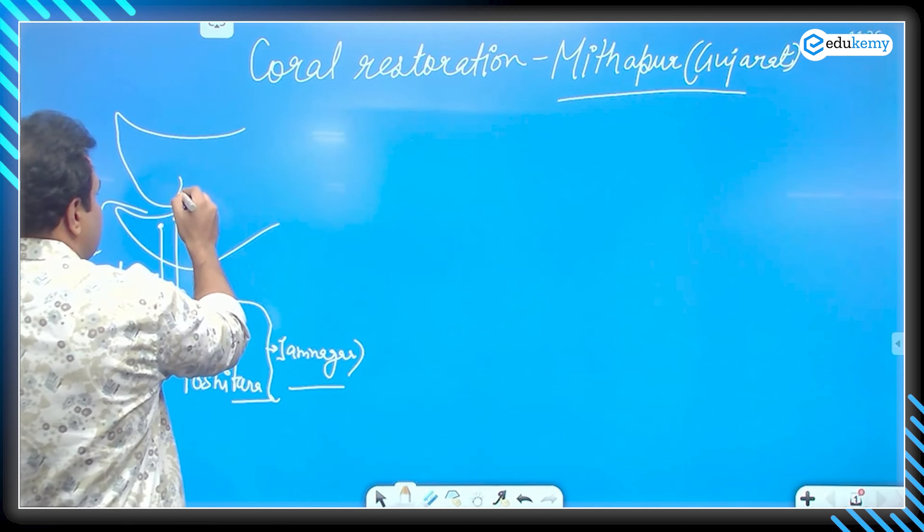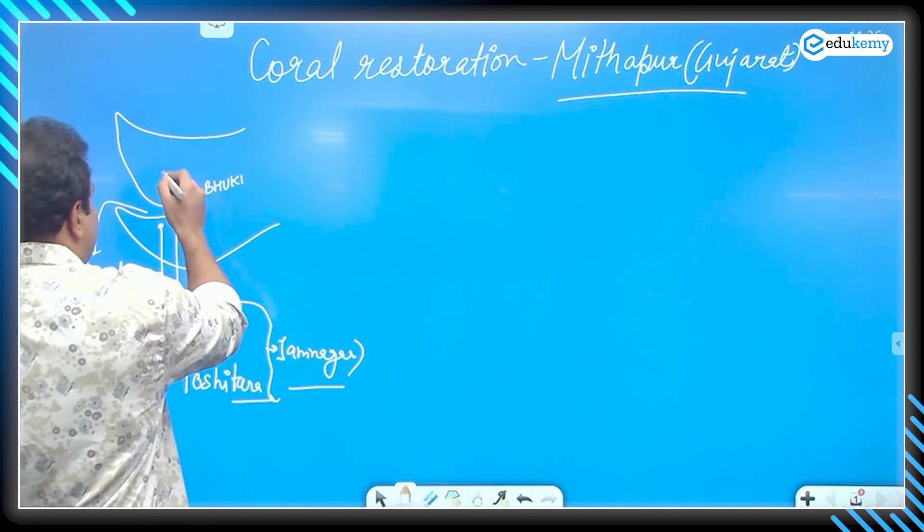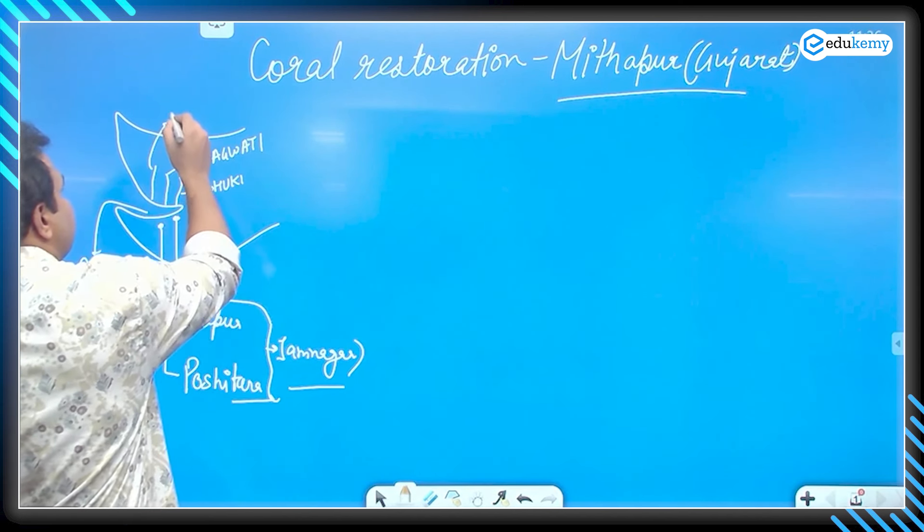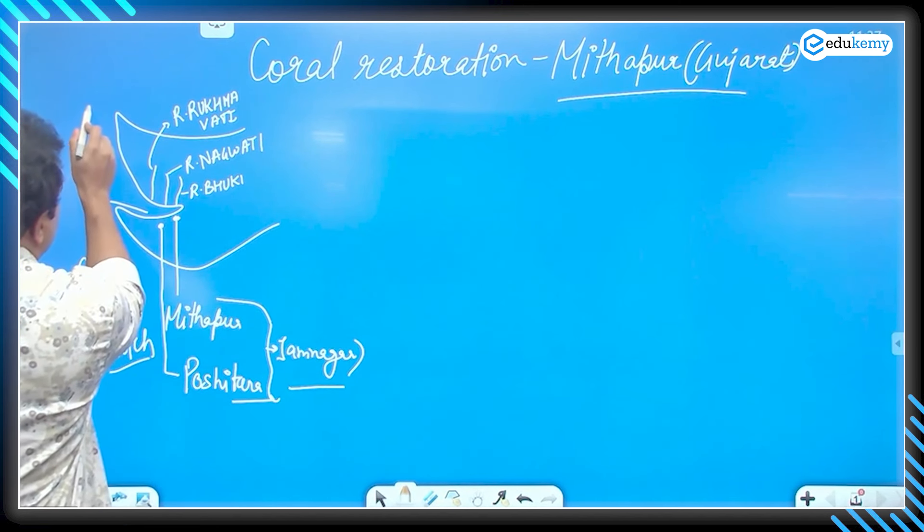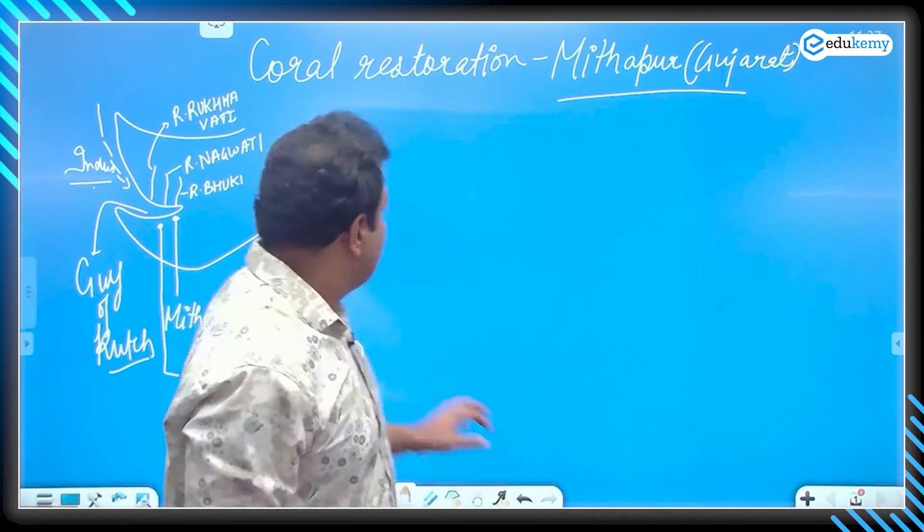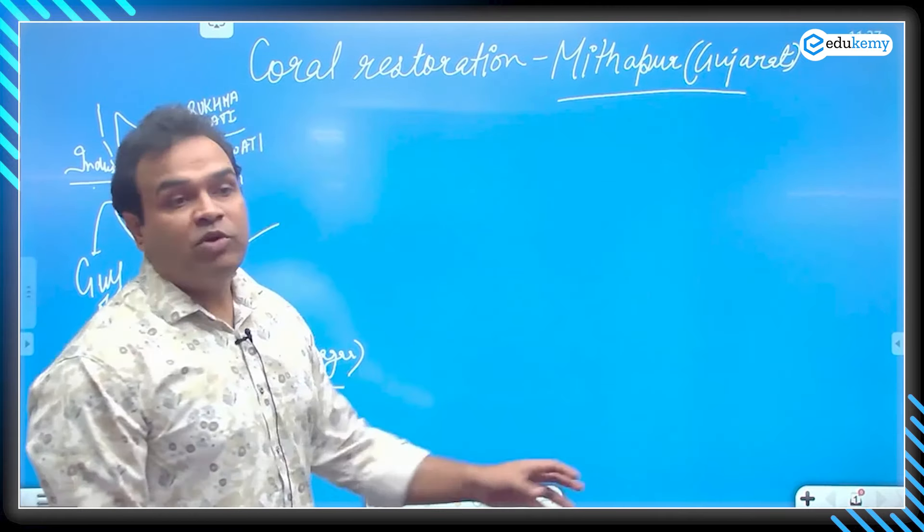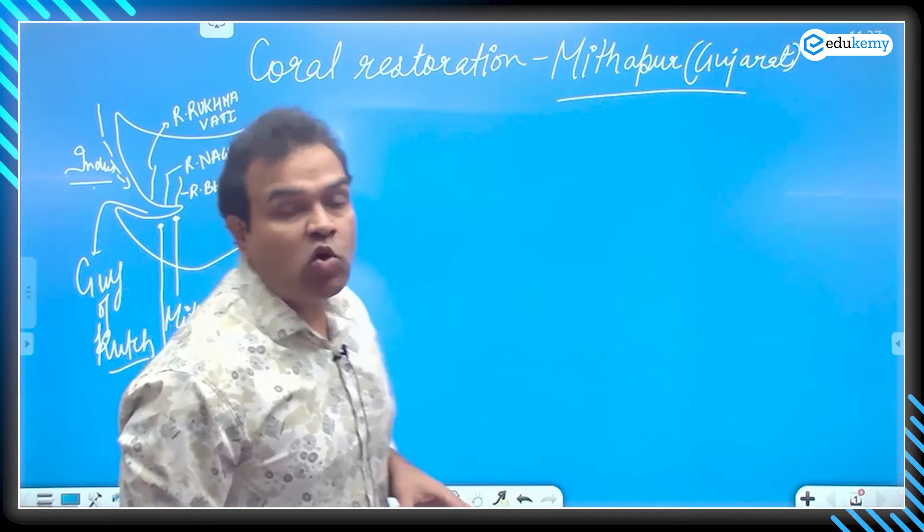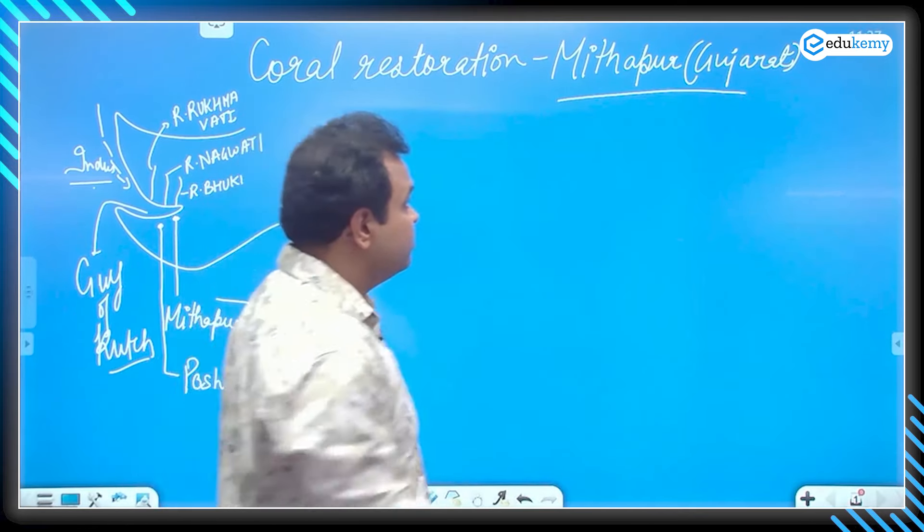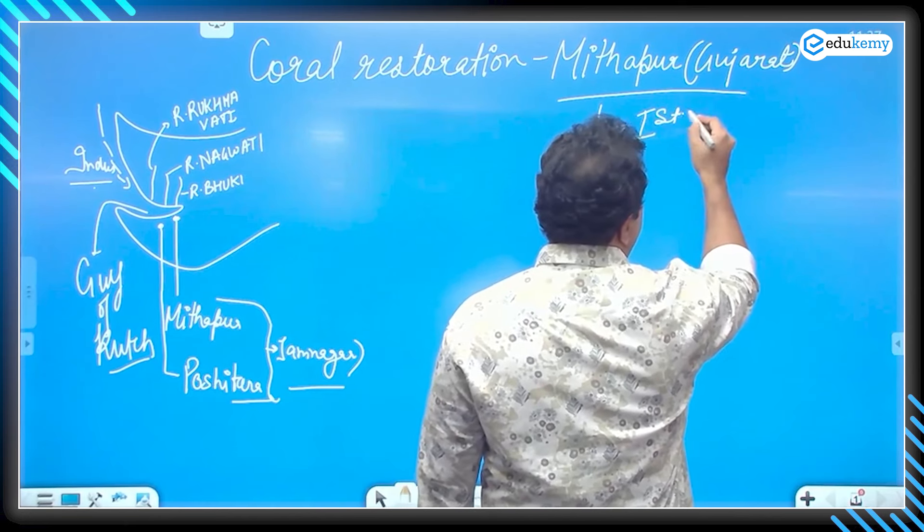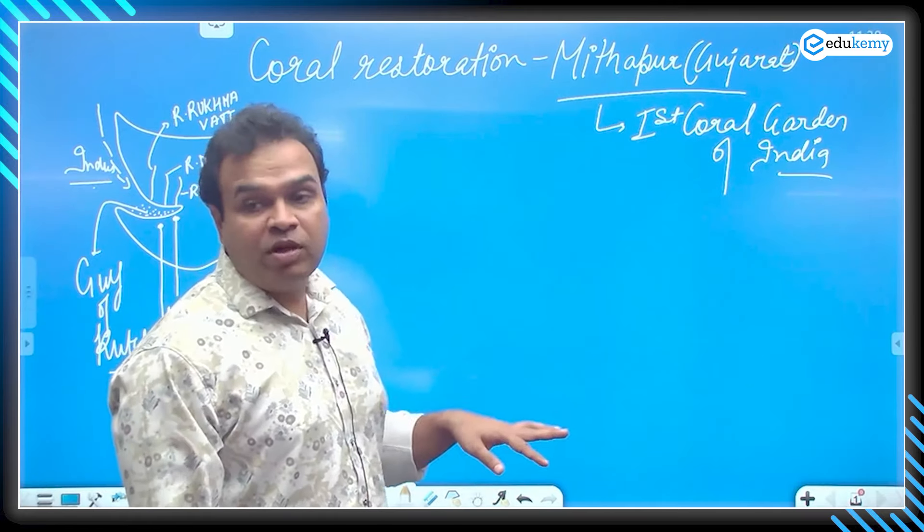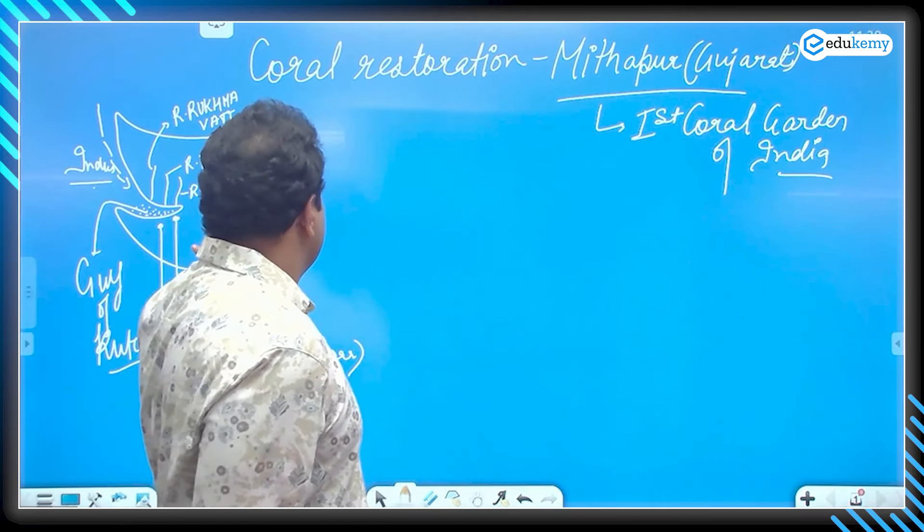One river is river Bhuki, river T, it was Nagvati. One more river is here, it is river Rukhmavati. From here, we also are getting the flow of water of Indus. One fact about Meethapur is that soon the first coral garden in India is going to be set up at Meethapur, first coral garden of India here. So this is about the Meethapur main locations, rivers that are flowing out.